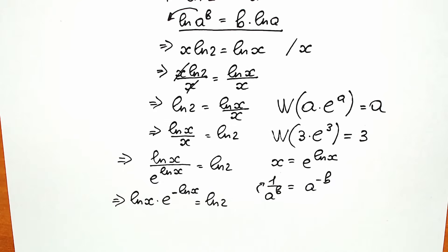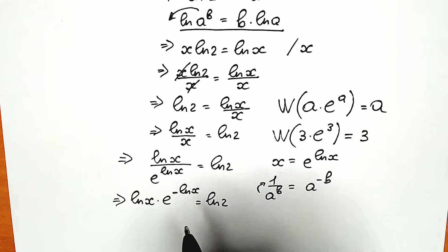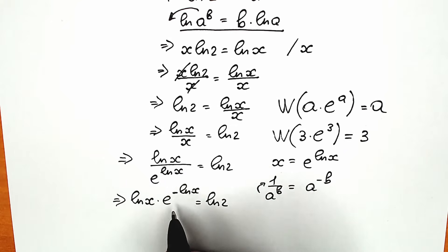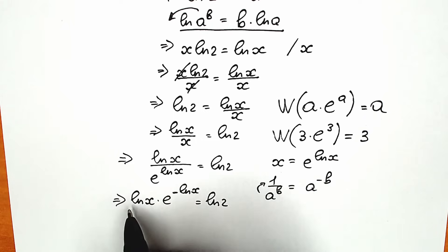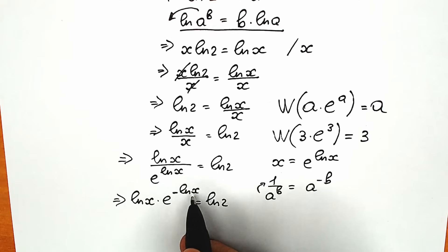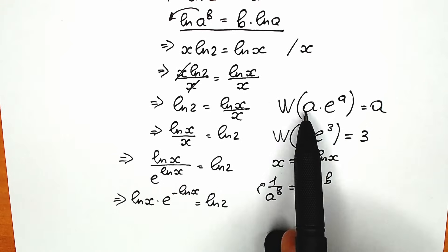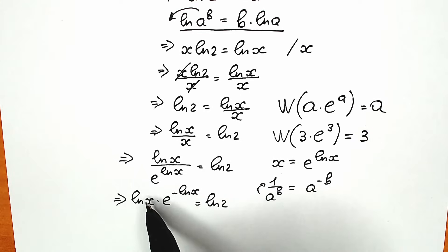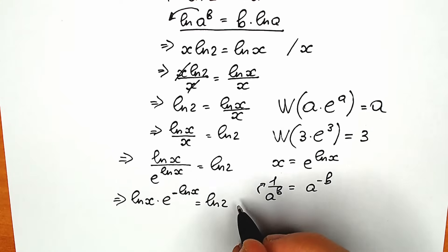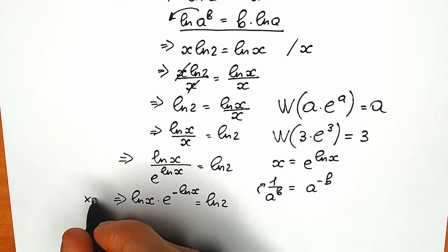Looking closely at the left side, we have natural log x and also minus natural log x in the exponent. For the Lambert W function we need the same expression — call it a — appearing both as the multiplier and in the exponent. Here we have a and minus a, so let's multiply both sides by minus 1.